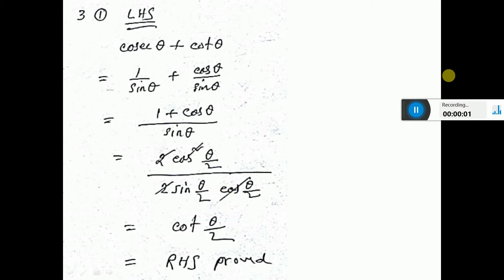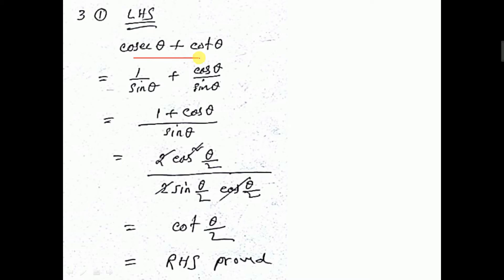In this sum, we have to prove that cosec θ + cot θ = cot(θ/2). So, break down cosec equal to 1 by sin, and cot equal to cos by sin. Now, take LCM to get 1 plus cos θ over sin θ.